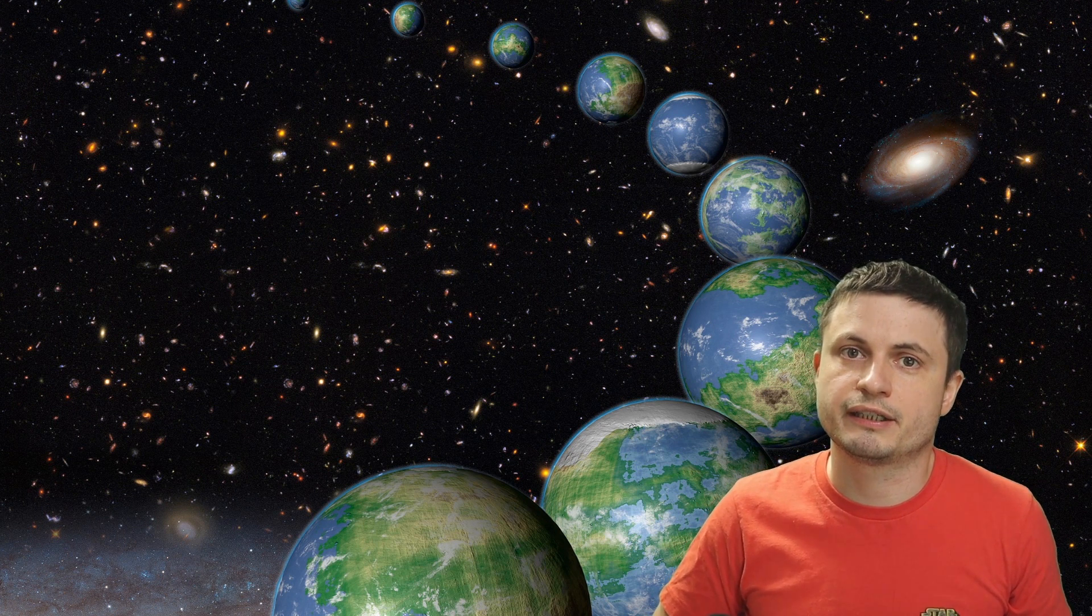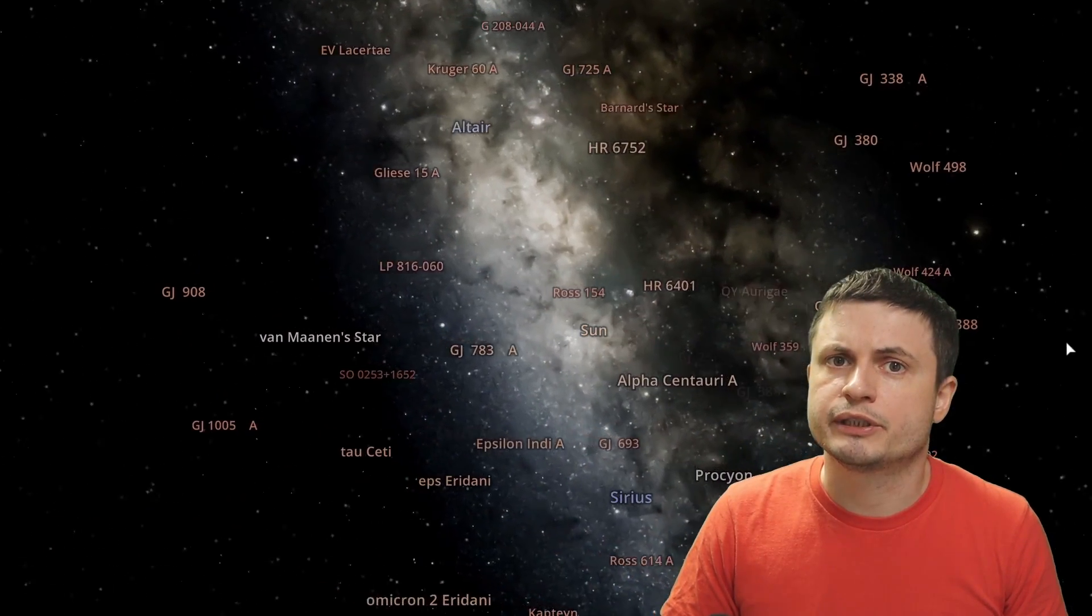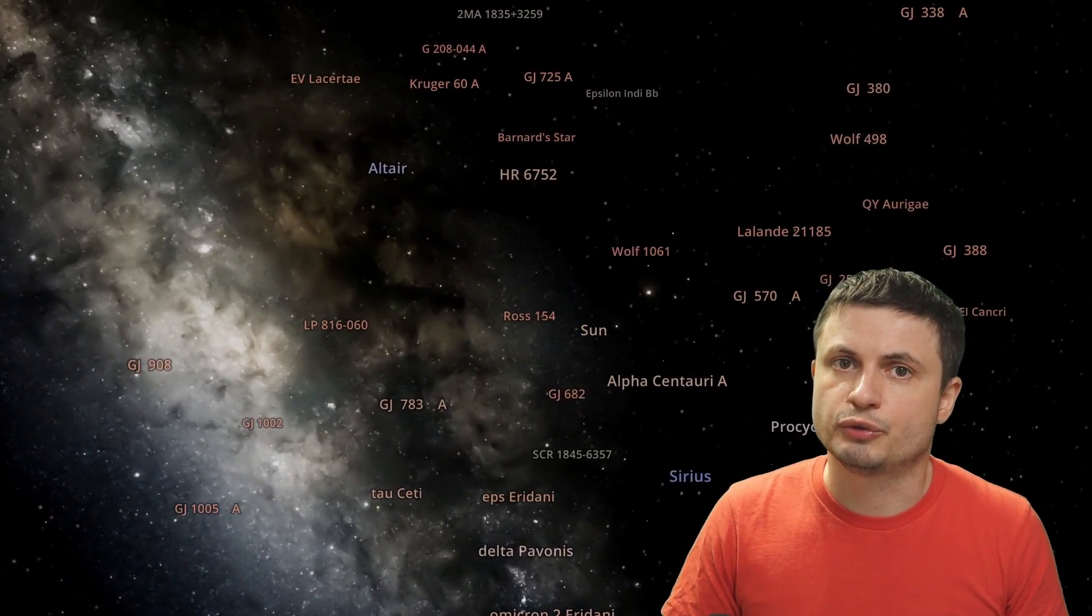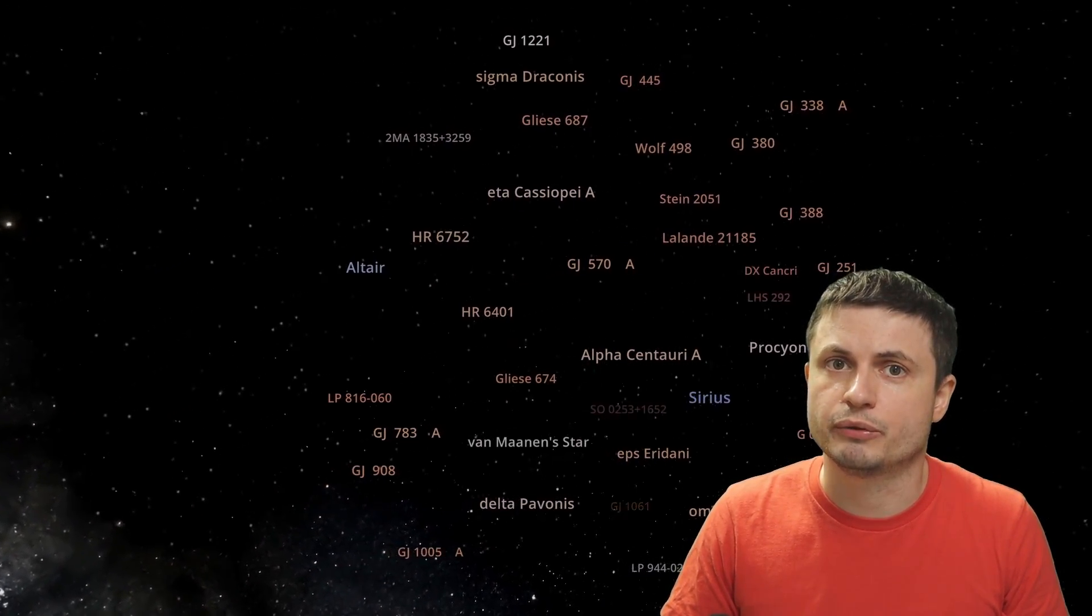the end result suggested that there could be about 300 million habitable planets in our galaxy. What's more exciting is that according to them, the nearest such planet should be within about 20 light years away from us. And that means that of all of these 100 or so nearest stars to us, within about 20 light years, there's at least one more habitable planet somewhere out there.